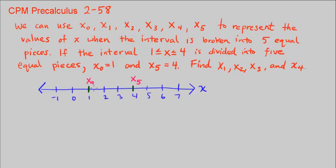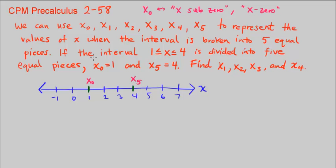So we want to basically find where x sub 1, 2, 3, and 4 are. You can say x sub n notation as x sub 0, x sub 1, x sub 2, x sub 3, x sub 4, x sub 5 — or sometimes people just call it x0, x1, x2, x3, and x4. So let's go ahead and continue on.